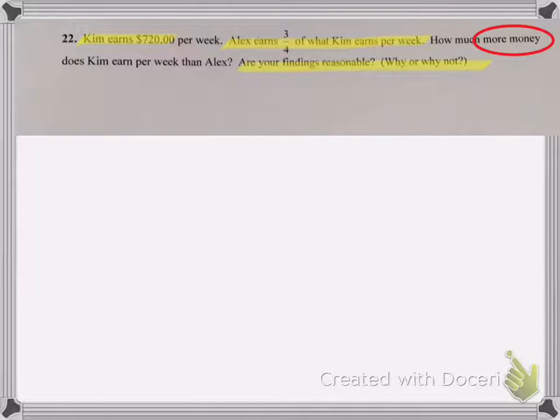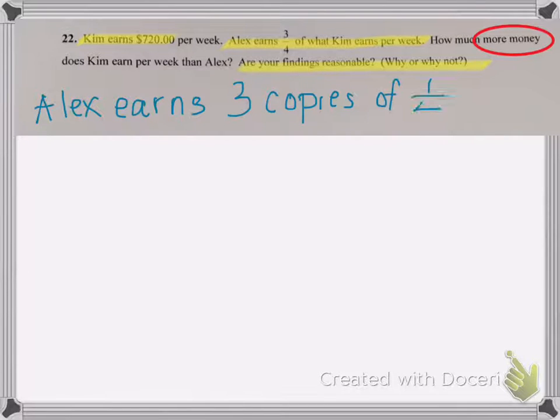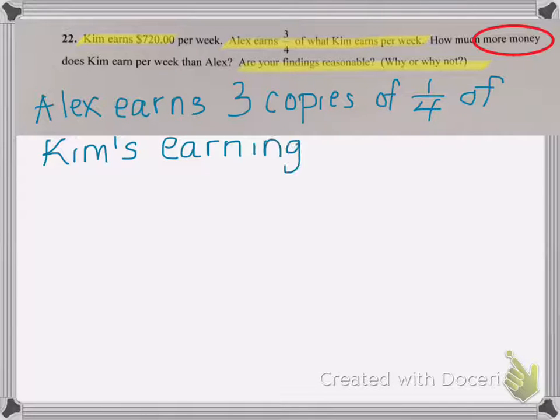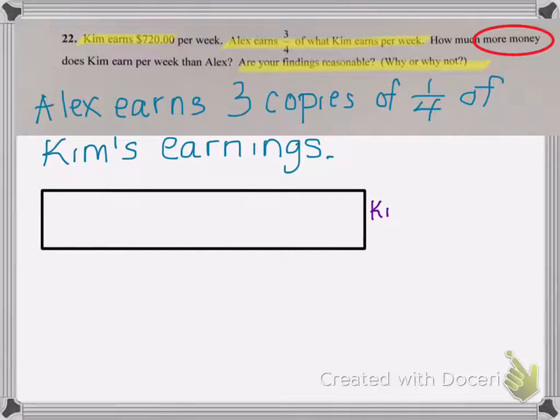Let's understand this sentence where it says Alex earns three-fourths of what Kim earns per week. That means that Alex earns three copies of one-fourth of what Kim earns per week. So let's have a fraction bar to represent Kim's earnings. Now if Alex earns three copies of one-fourth of her earnings, let's take her earnings and divide them into four equal parts.